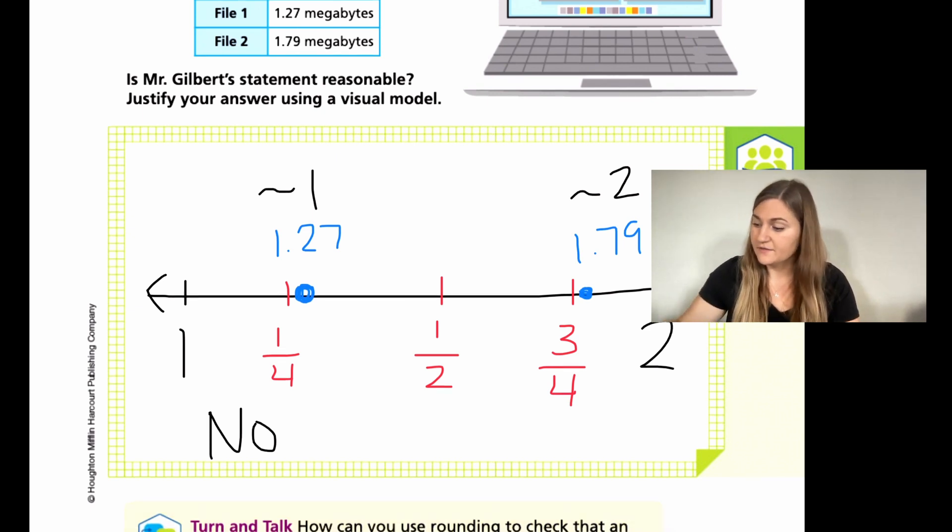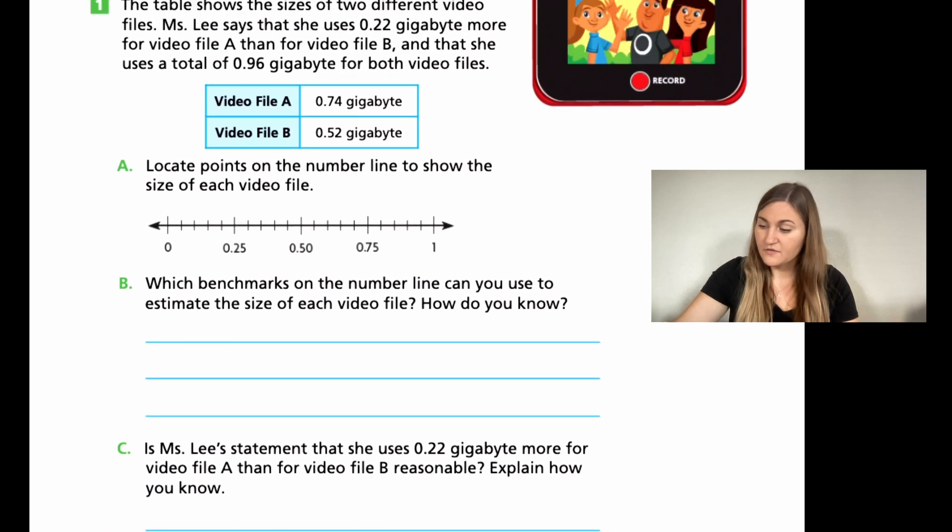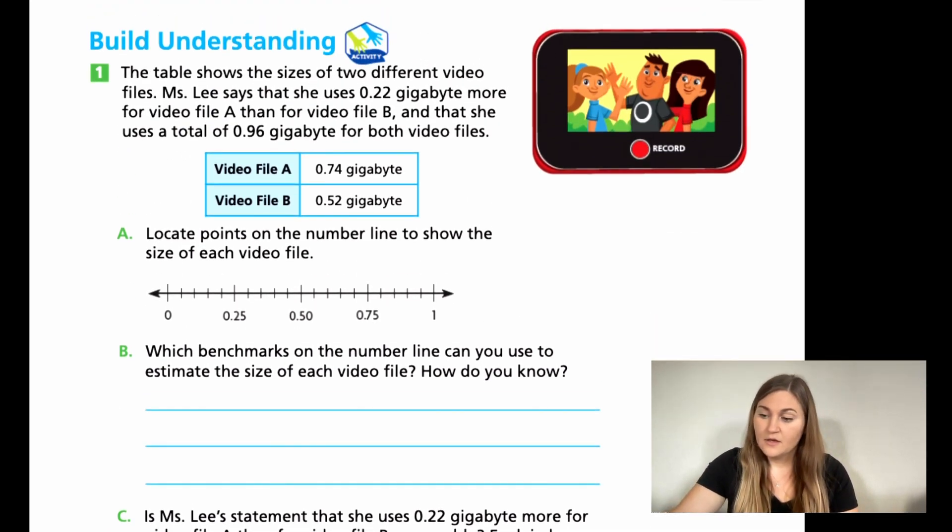All right. Let's go ahead and flip the page. We're on 348. The table shows the sizes of two different video files. Ms. Lee says that she uses 0.22 gigabytes more for video file A than for video file B. And that she uses a total of 0.96 gigabytes for both video files. So again, it's something very similar showing that blue table. This is video file A is 0.74.